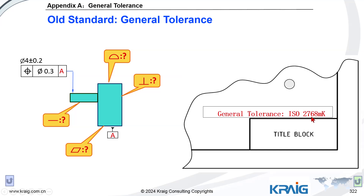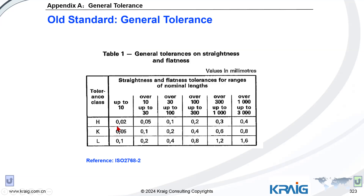The famous standard number is ISO 2768-mk. This standard has two sub-standards: the first is 2768-1, which covers size tolerance, and the second is 2768-2, which covers geometric tolerance. 'M' stands for medium class of tolerance, and 'K' also refers to medium for geometric tolerance. So we know the standard and the tolerance class, and we can find the flatness tolerance value.